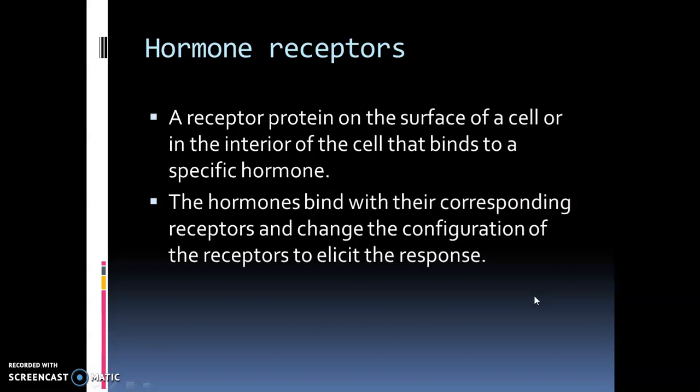Hormones bind with the receptors, and this binding brings about a change in the configuration of the receptors, which causes a response within the cell. The hormone-receptor interaction is highly specific — each hormone has a specific receptor, and only the receptor specific for a hormone can bind with that hormone. Other receptors cannot bind with it.